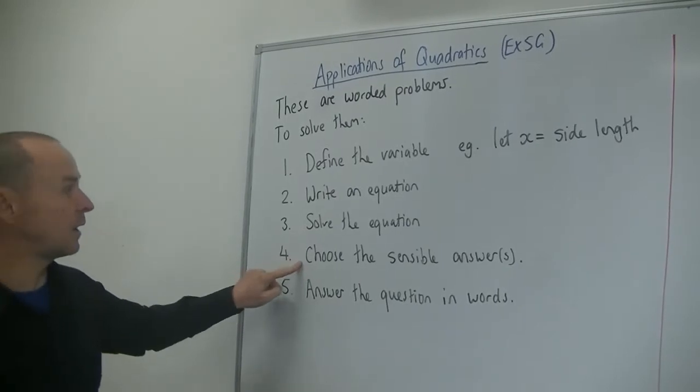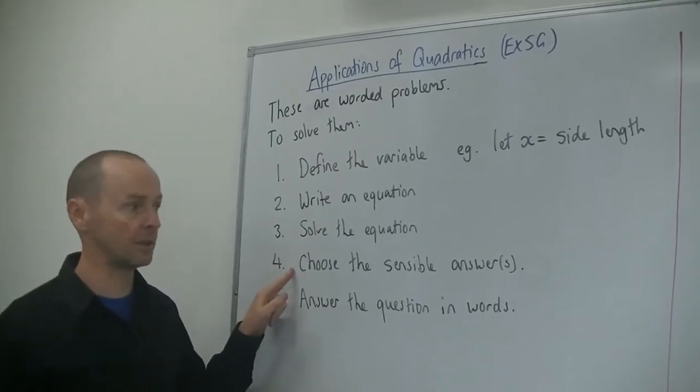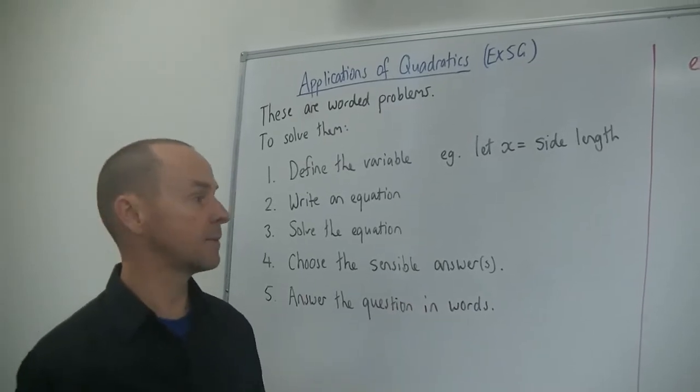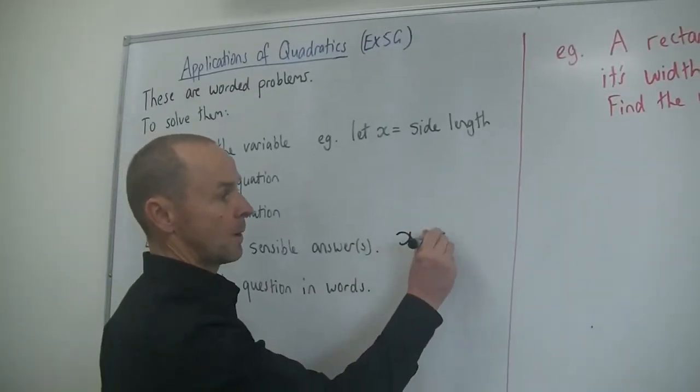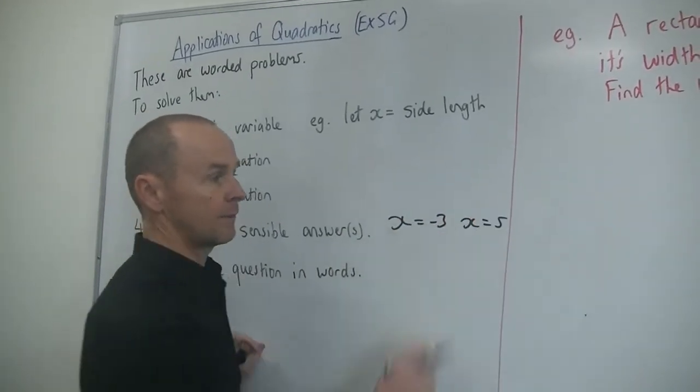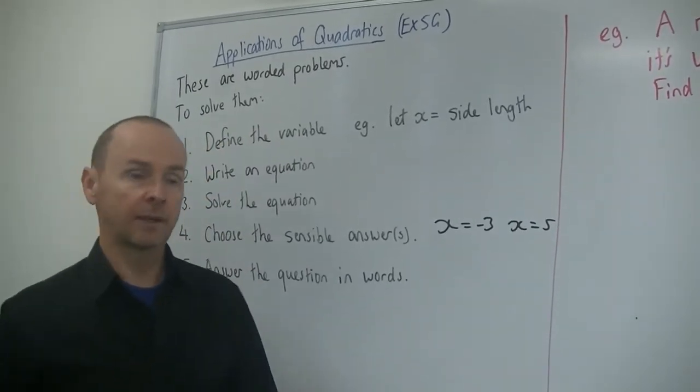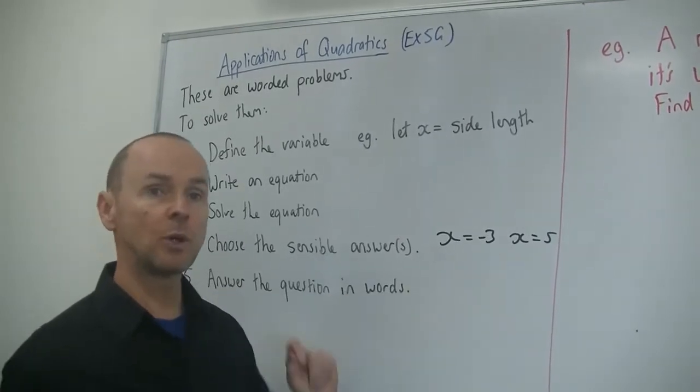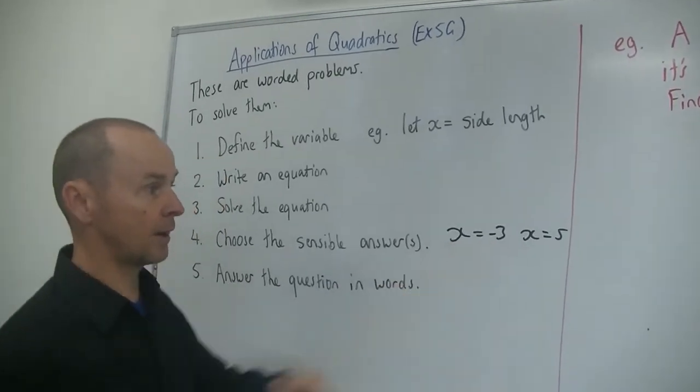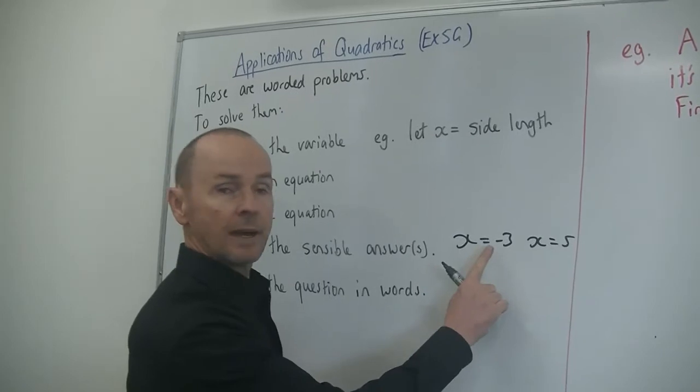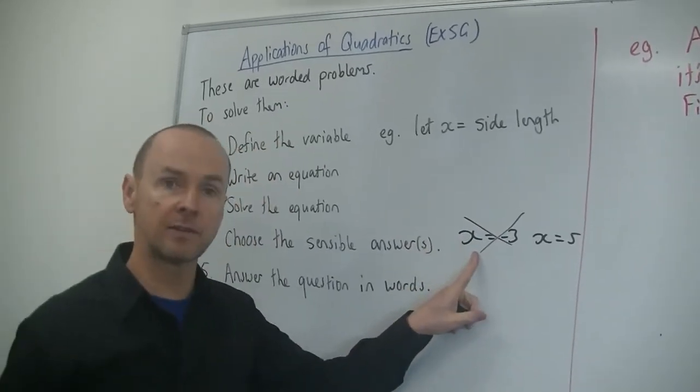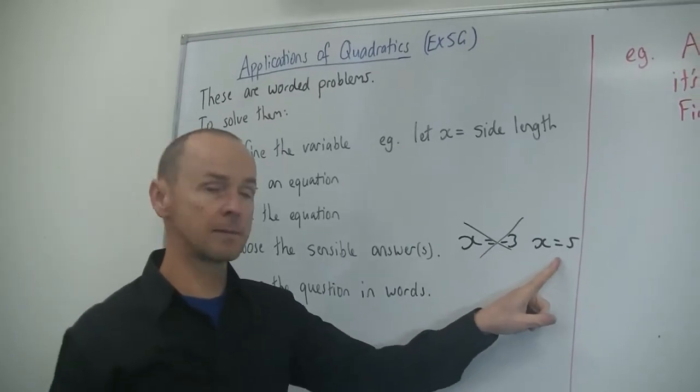Now, choose the sensible answers. What that means is sometimes you'll get two answers. You might get something like x equals minus three and x equals five. Now, if they're talking about a side length, negative three is not a sensible answer. So you know the answer's five. So what you do in that case, you don't just cross that out. You give them two answers. You say these are the two answers and then you discount this one. You say this one is not a sensible answer. So therefore, the answer must be five.